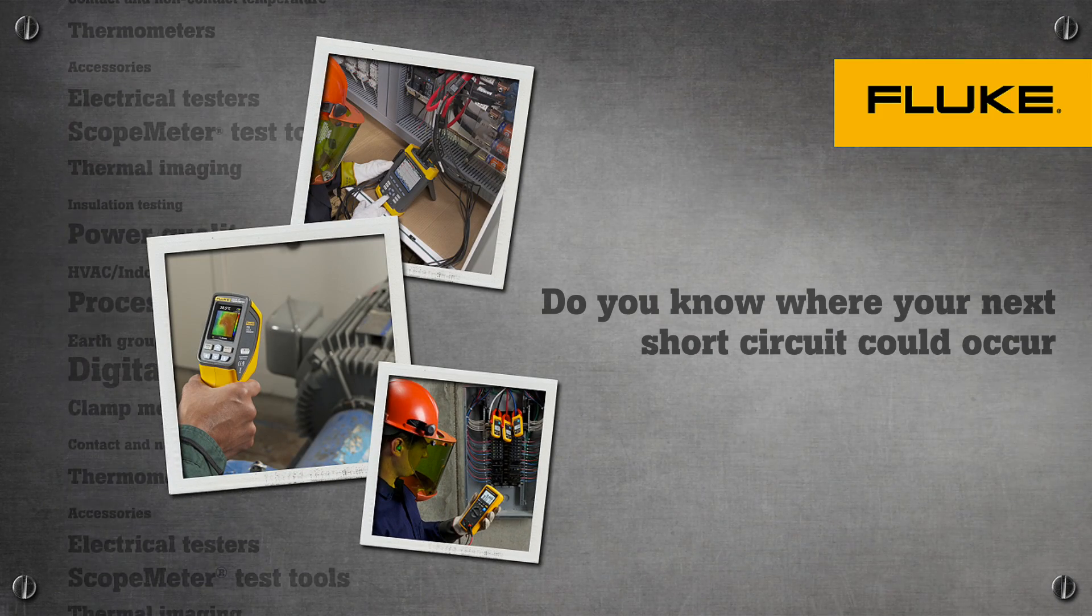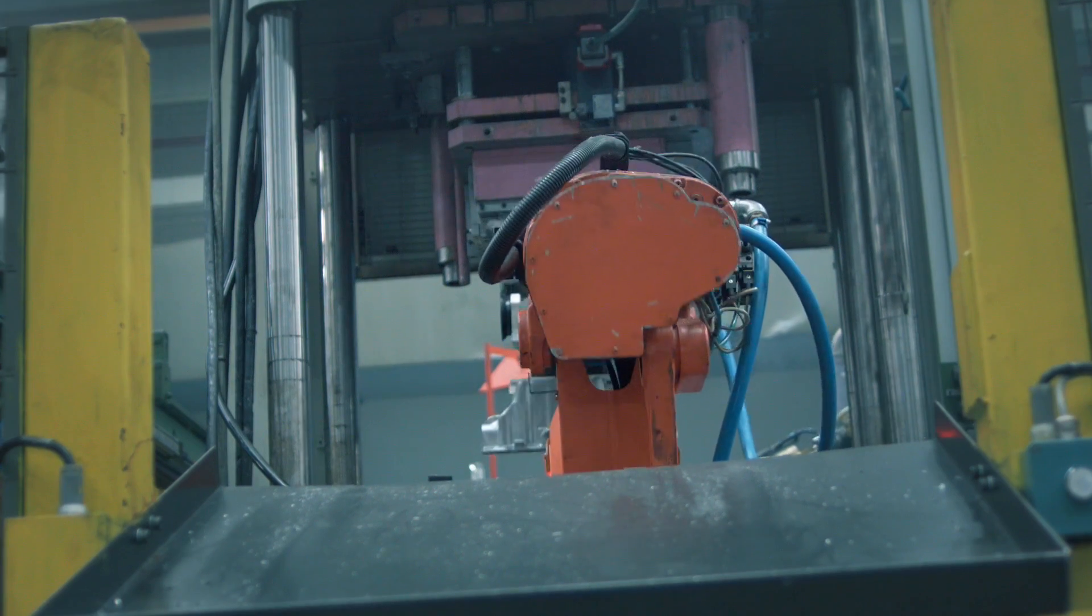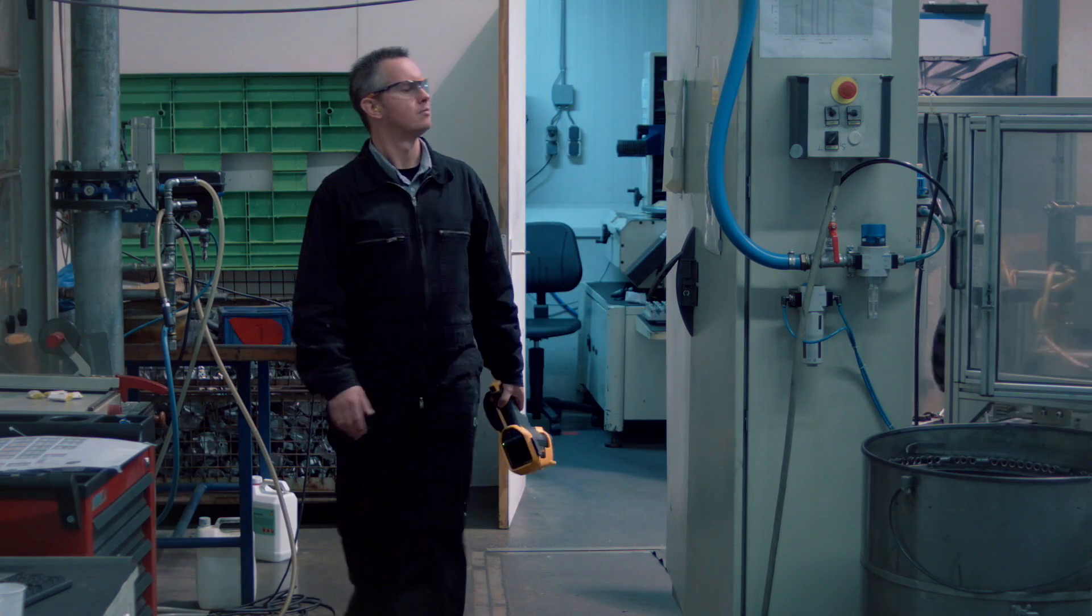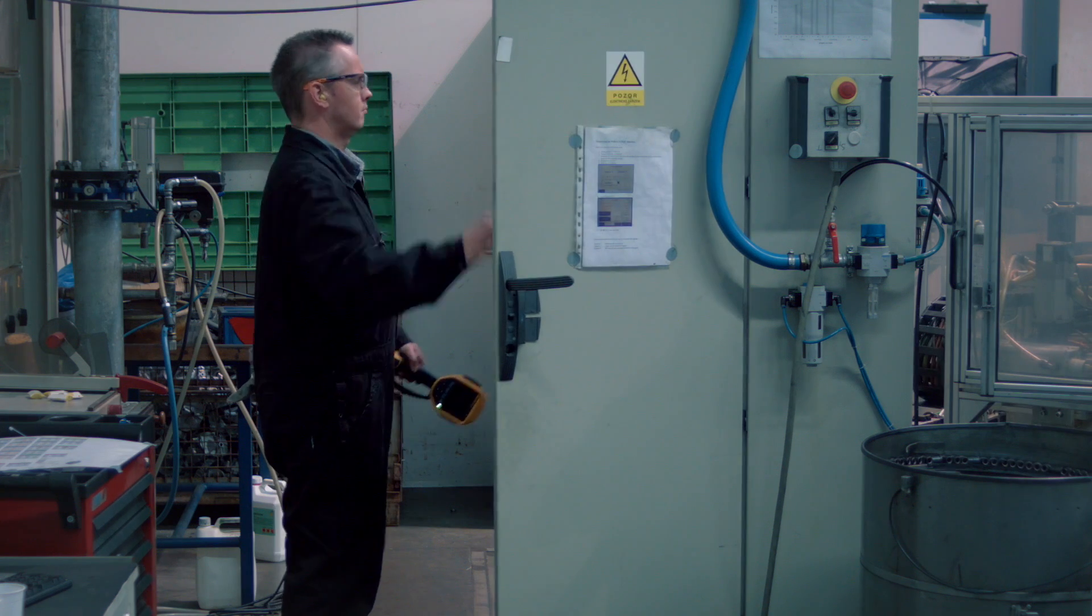Do you know where your next short circuit could occur? Your Fluke thermal camera will help you identify hotspots in the electrical equipment. Hotspots are a clear indication of loose or corroded connections and become visible because of the heat they generate.